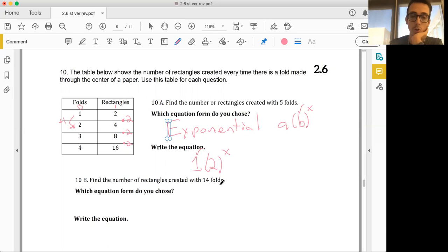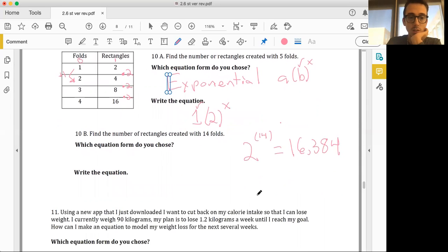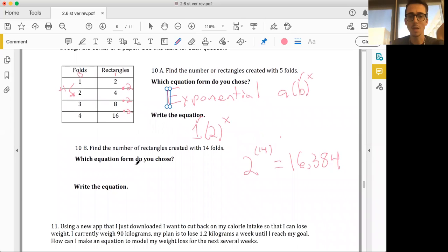Hope that helps. Find the number of rectangles created with 14 folds. All right, we can do that. 14 folds. Well, we know that this is 2, and then instead of x we're putting in 14. So this is 2 to the 14th power. That's a pretty big number, but it makes sense how this is going to keep going. That would get you 16,384. Cool. Hope that helps. Which equation? I mean, we're using the same one. So it's still this one.